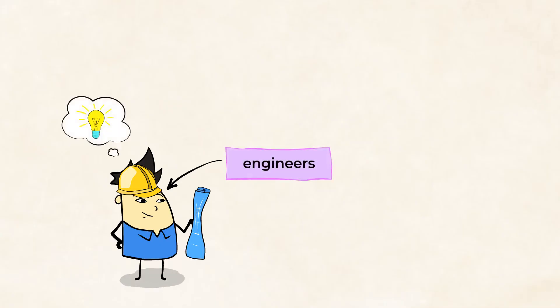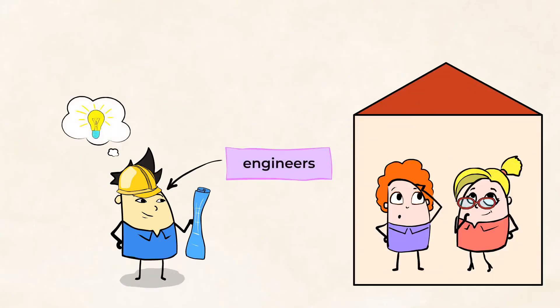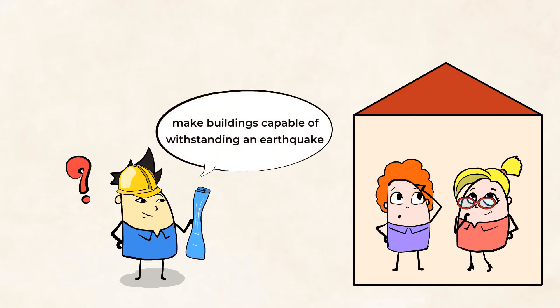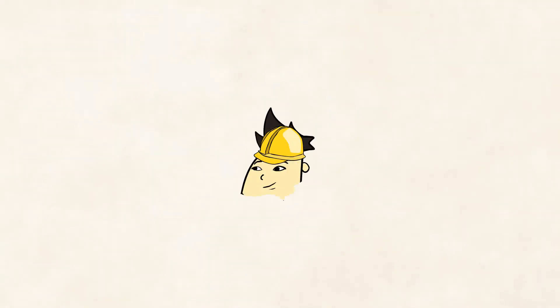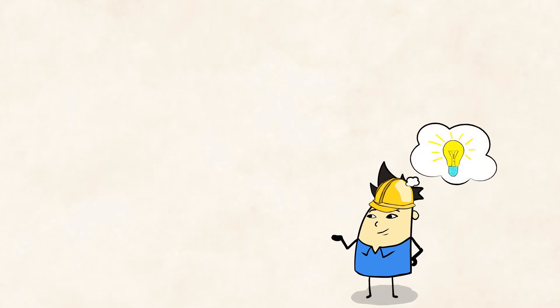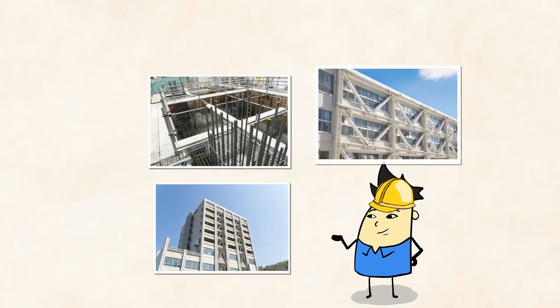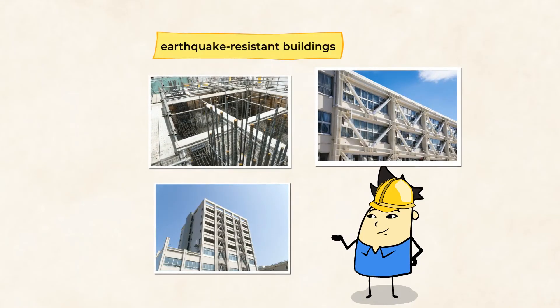Engineers have been working to come up with ways to keep people safe during an earthquake. They have asked questions like, how can buildings be made to withstand the effects of an earthquake? What kind of structure would be best to be able to withstand the shaking of the Earth's surface? Through asking these types of questions, engineers have designed and created ways to make earthquake-resistant buildings.